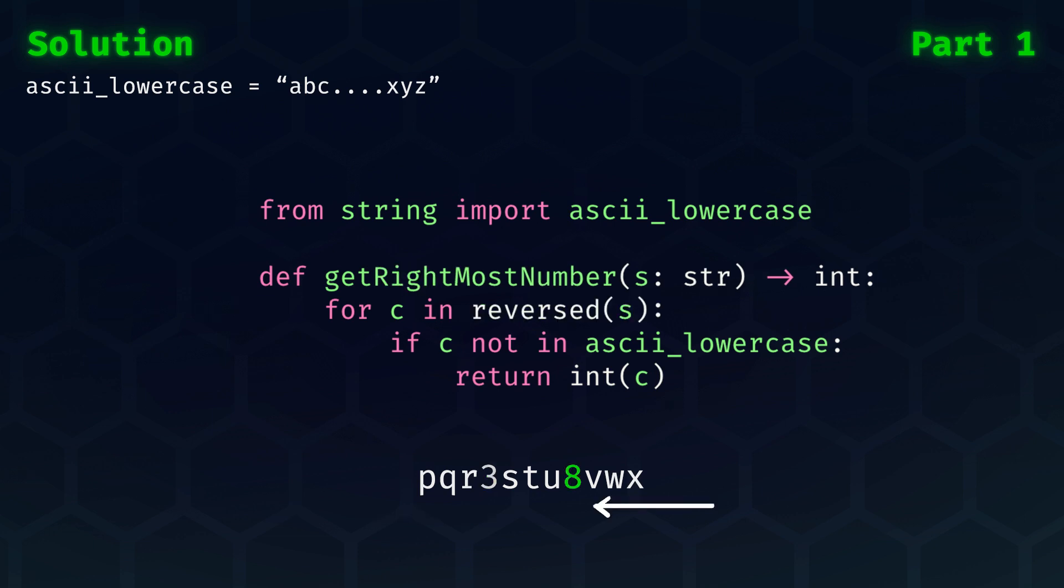For part one of today's problem, getting the rightmost number is almost identical to getting the leftmost number. We simply iterate over the reversed string.